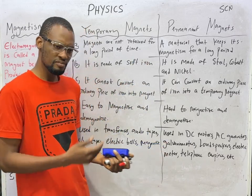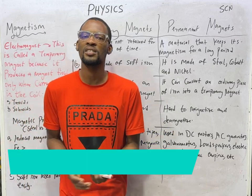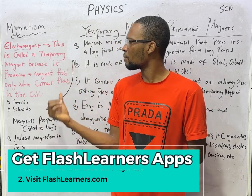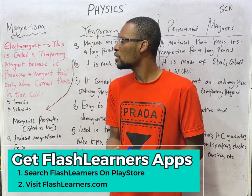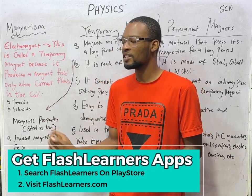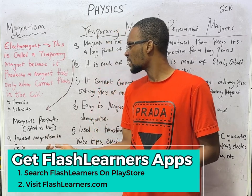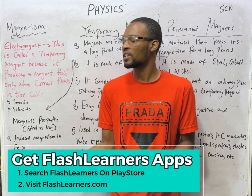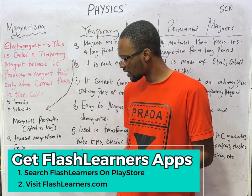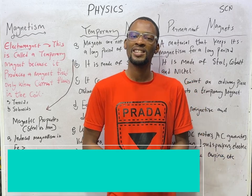Permanent magnets are used in DC motors, AC generators, galvanometers, loudspeakers, electric meters, and telephone earpieces. An electromagnet is called a temporary magnet because it produces a magnetic field only when current flows in the coil. Torroids and solenoids are examples of electromagnets. For steel versus iron: induced magnetism in iron is greater than in steel; soft iron is easily magnetized but steel is not; soft iron loses magnetism easily but steel does not.